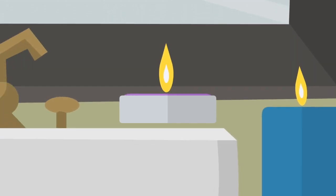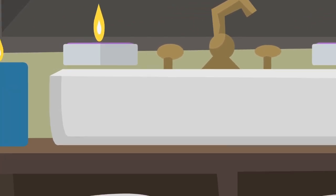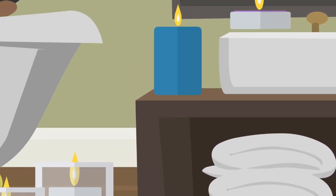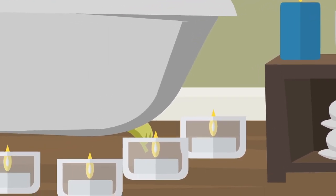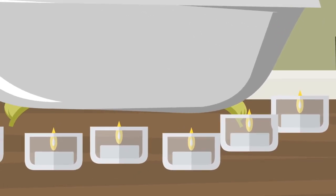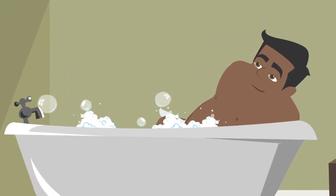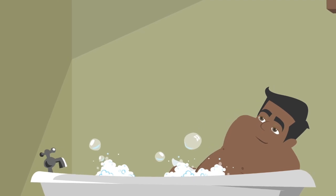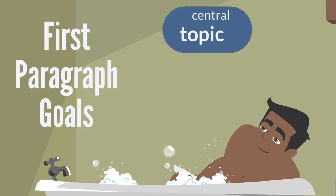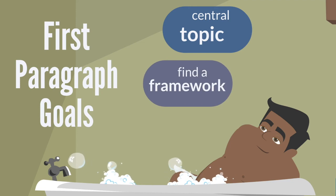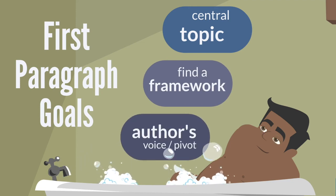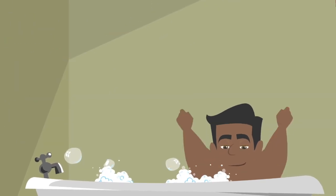We're going to read some passages now, so let's get into our happy place for reading. Every second is precious on the LSAT, but we slow down during the first paragraph to settle on the central topic, to try to pick a big picture framework so there's really only two or three big ideas we care about, and to listen for whether the author's voice came through or whether there was a special pivot moment.